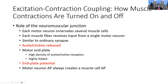Acetylcholine binds to the cholinergic receptors — in this instance, they're going to be nicotinic cholinergic receptors. From there, the motor end plate, which is again that highly folded region that has lots of acetylcholine receptors, will bind, and then we have the end plate potential, and that is how the muscle will create the contraction.